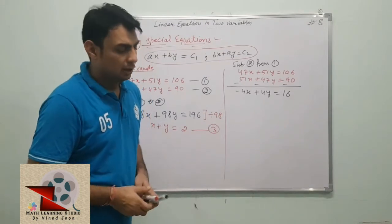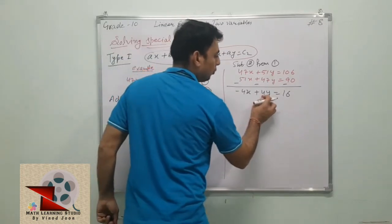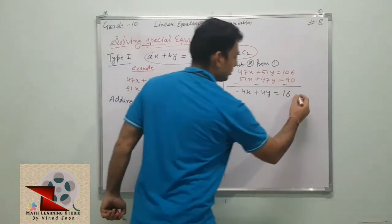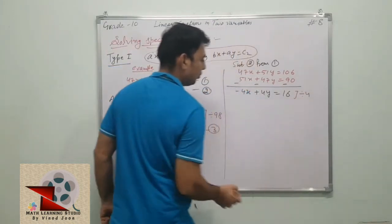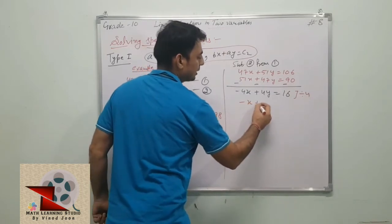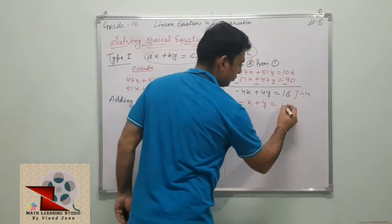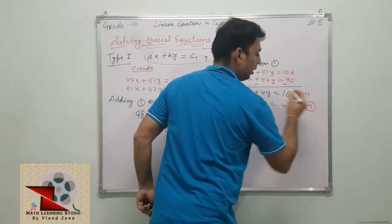Can this equation be simplified? Of course it can. 4, 4, and 16 are the coefficients. We can divide by 4. So this equation can be divided by 4, and you have -x + y = 16 divided by 4 is 4. This becomes equation number 4.